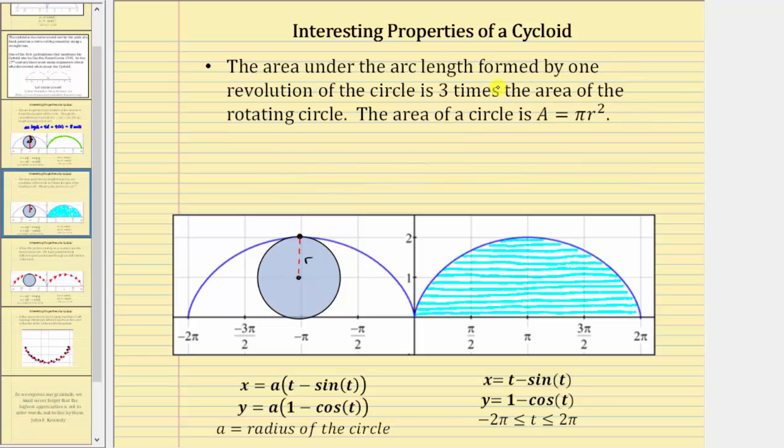Next, the area under the curve formed by one revolution, or one rotation of the circle, is three times the area of the rotating circle. Remember, the area of a circle equals pi times the radius squared.